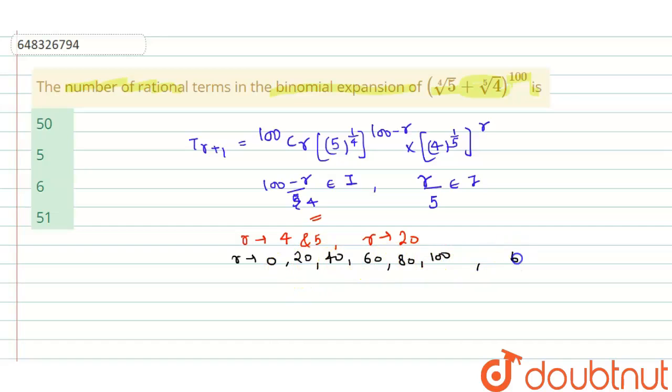So the value of r can be 0, 20, 40, 60, 80, and 100. So 1, 2, 3, 4, 5, 6. Total 6 rational terms can be formed from this binomial expansion.